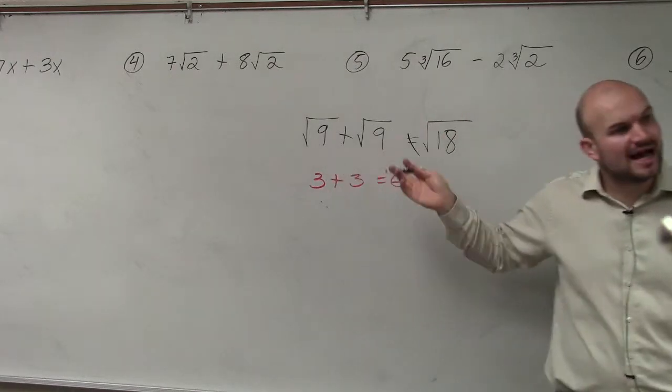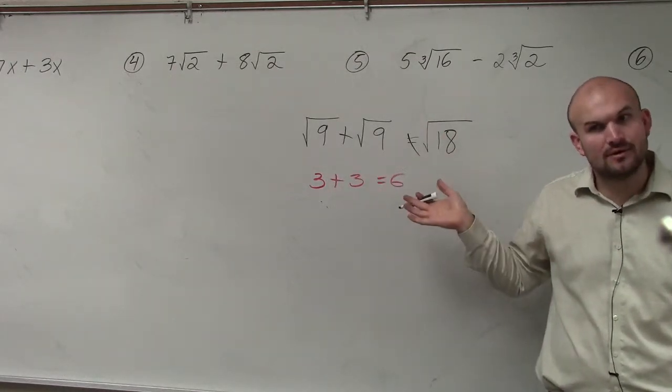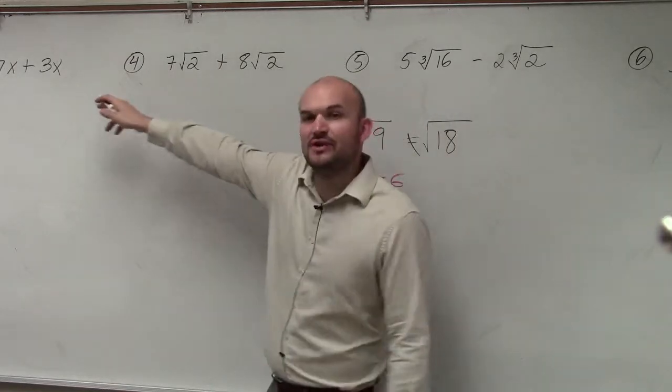So if the square root of 9 plus the square root of 9 doesn't equal square root of 18, then what does it equal? Well, again, that's why I gave you guys the variable ones.